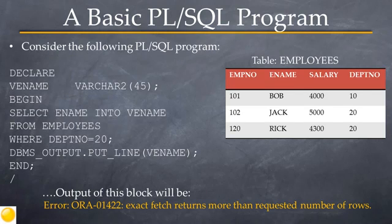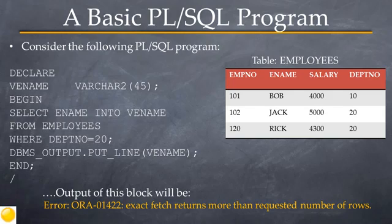To understand the behavior and the use of the explicit cursor I'll be using the help of a PL/SQL program. Before we do that let's have a look at some data in the employees table. There are four columns: EMPNO which is the employee number, ENAME the employee's name, SALARY which is the salary of the employee, and DEPTNO the department number the employee belongs to. There are three rows in the table, and notice that there are two employees who belong to department number 20.